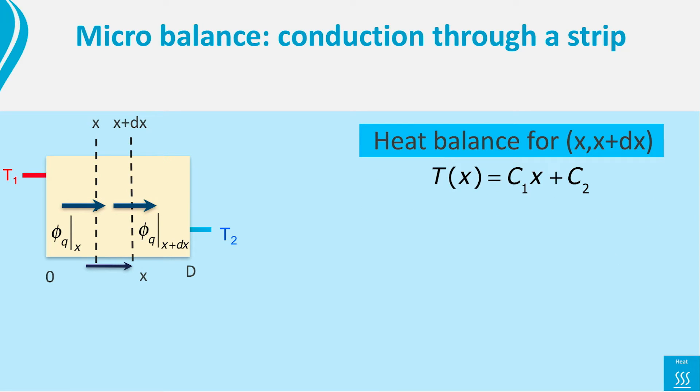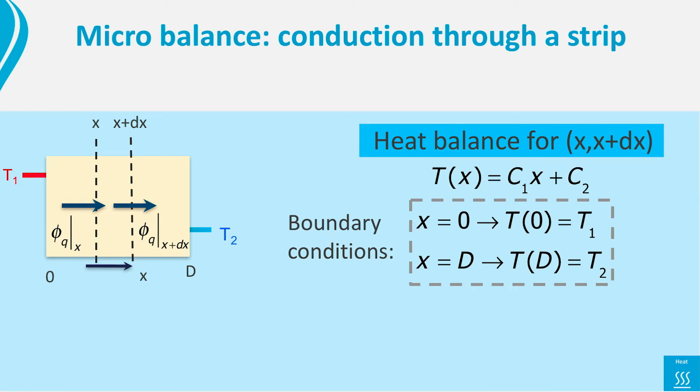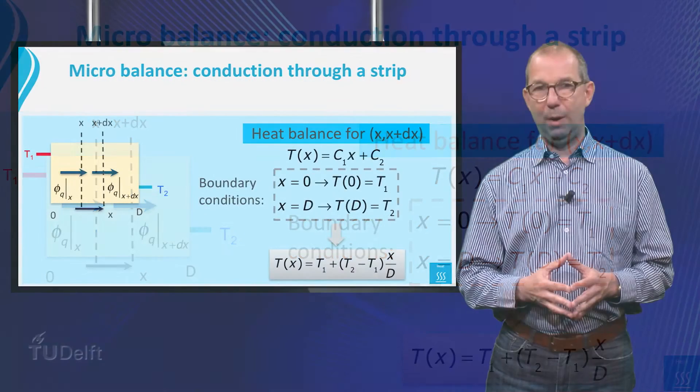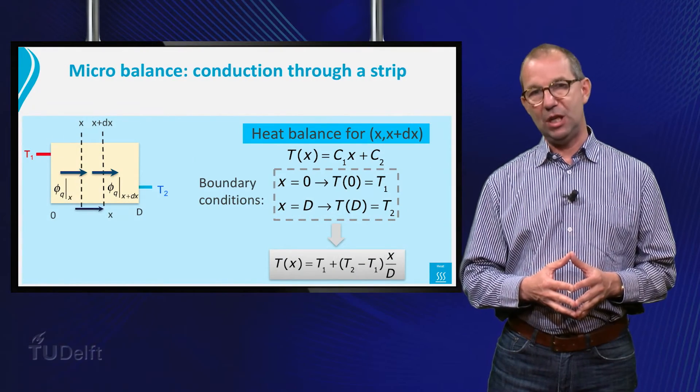The two integration constants c1 and c2 are found from two boundary conditions. At x equals 0 the temperature of the plate is T1, and at x equals d it is T2. Substitute these boundary conditions in our T equation and we find the solution to our heat transfer problem. T(x) is T1 plus (T2 minus T1) times x over d.